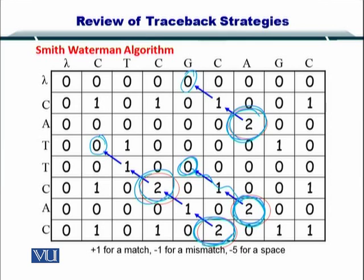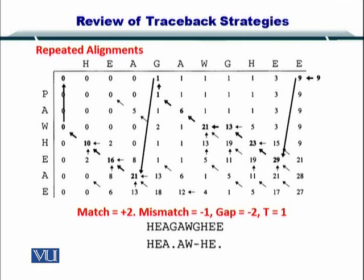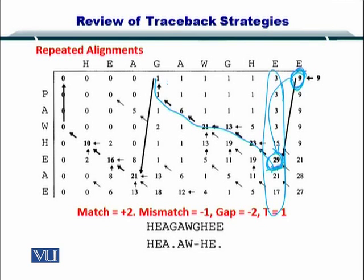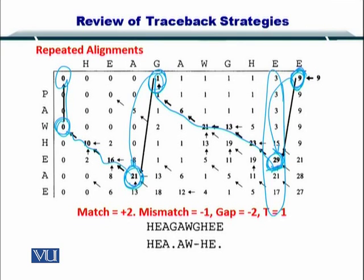For the repeated alignments, our traceback started from the first element in the last column. We jumped to the next column by selecting the highest value — in this column the highest was 29 — and then did a traceback until we reached the first row. Then we jumped to the highest value in the next column and traced back until we reached the first column where we reached the 0, 0 element.